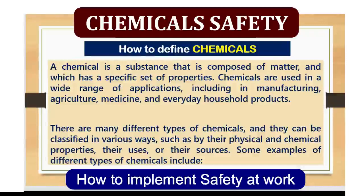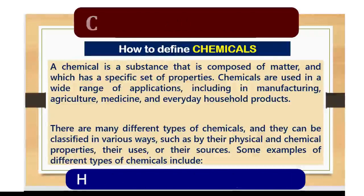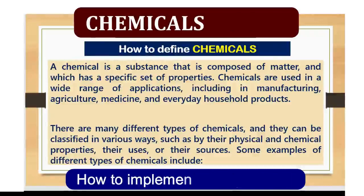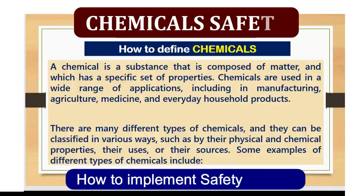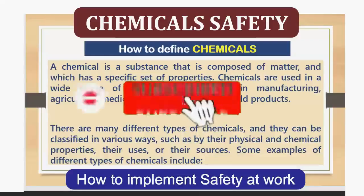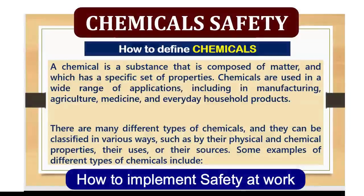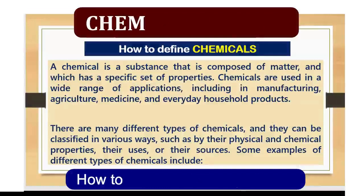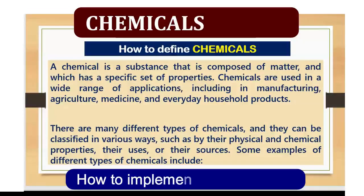A chemical is a substance that is composed of matter and which has a specific set of properties. Chemicals are used in a wide range of applications, including in manufacturing, agriculture, medicine, and everyday household products. There are many different types of chemicals and they can be classified in various ways, such as by their physical and chemical properties, their uses, or their sources.